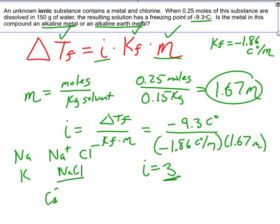Our alkaline earth metals, like for example calcium, which is positive 2, when that mixes with chlorine, it will make CaCl2. And this has a Van't Hoff factor of 3. So that means that this must be an alkaline earth metal because an alkali metal could not handle this.